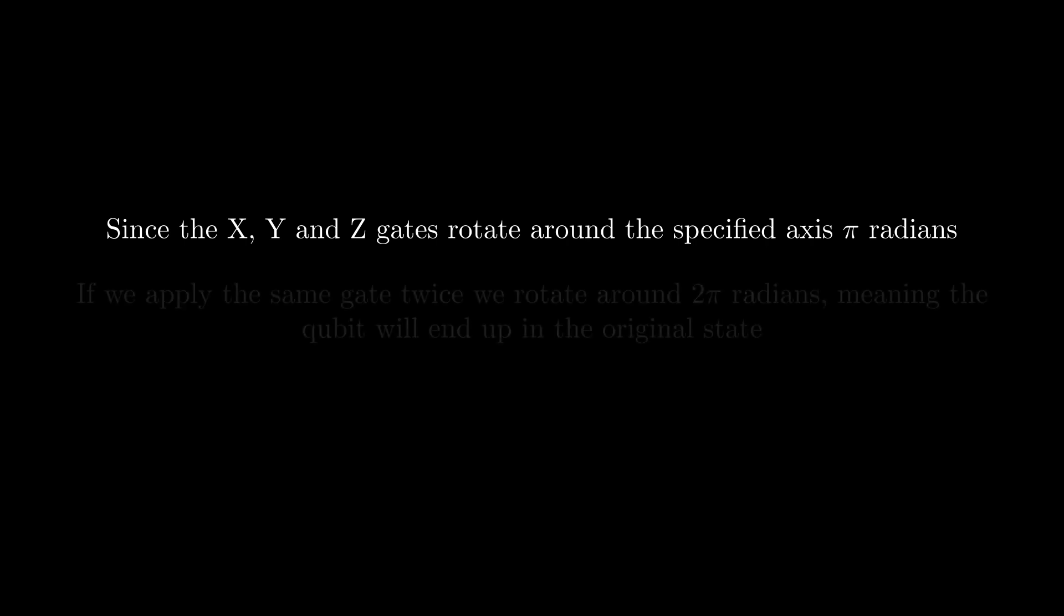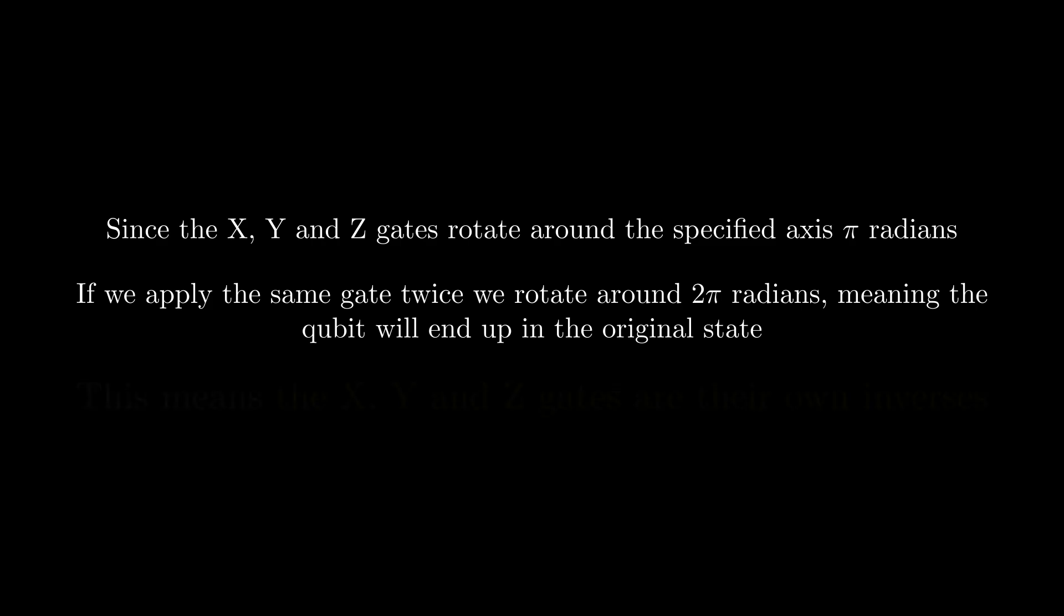Since these gates rotate the qubit around the specified axis by pi radians, if we apply the same gate twice, one after the other, then the qubit returns to its original position. This means that these three gates are their own inverses.